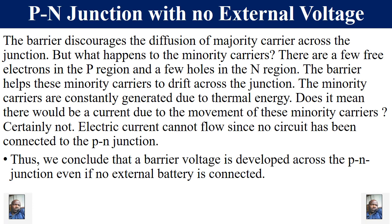What is the effect of VB on minority charge carriers? Unlike charges are attracted, so the barrier potential assists the movement of minority charge carriers across the junction. But this will not result in an electric current, since no external circuit has been connected to the PN junction. Therefore, we can conclude that barrier voltage is developed across the PN junction even if no external battery is connected.